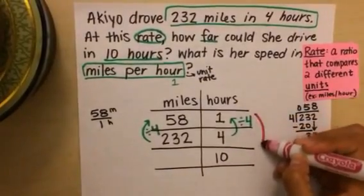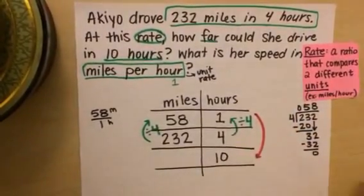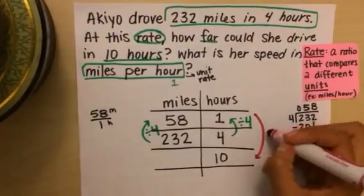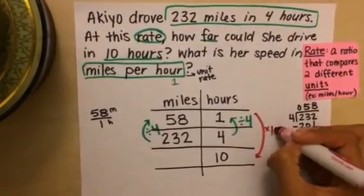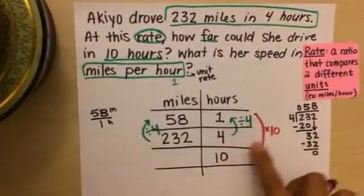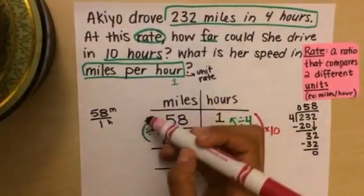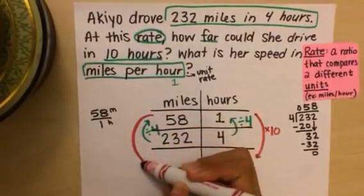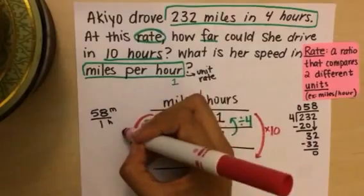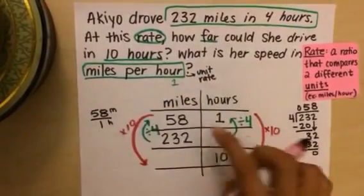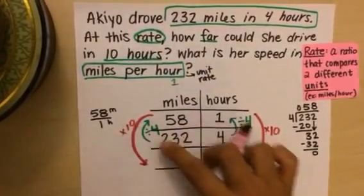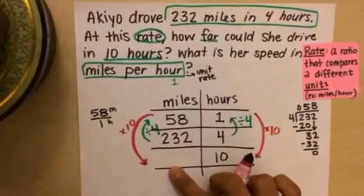Does one go into 10? Yes, one goes into every number. How many times? Well, one times 10 will give me 10. So that means one goes into 10, 10 times. Got to do the same thing to the other side to keep them equal. Multiply 58 times 10. And that's going to give us this missing value.